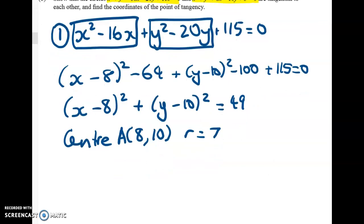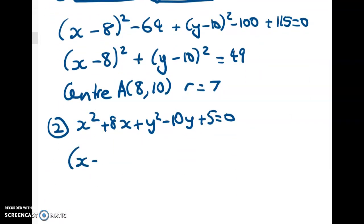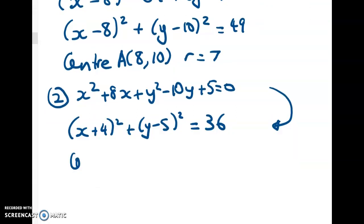Now because this video is going to get a bit long, I'm going to jump straight to the cleaned up version of that. So there we go, there's our first circle equation coming out now and we can write down the centre is 8, 10 and the radius is 7 and I'm going to call that centre A. I'm going to do the same thing for the next equation. So we've got x squared plus 8x plus y squared minus 10y plus 5 equals 0 and when I clean this one up, we get x plus 4 squared plus y minus 5 squared.